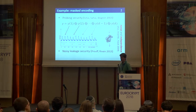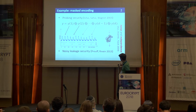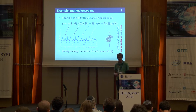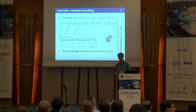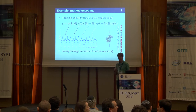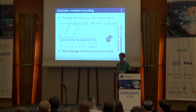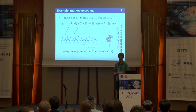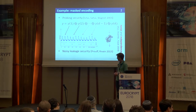There's a very nice result by Duc, Dziembowski, and Faust in 2014 showing that probing security actually implies noisy leakage security, which is extremely convenient because it's much easier to do proofs with probing security and in the end we're more interested in noisy leakage security. For the proof to hold we need two things: noise — every sample in the leakage trace must be sufficiently noisy — and independence, meaning each leakage sample depends only on one share, which can be guaranteed in a serial implementation where everything is well-separated in time.